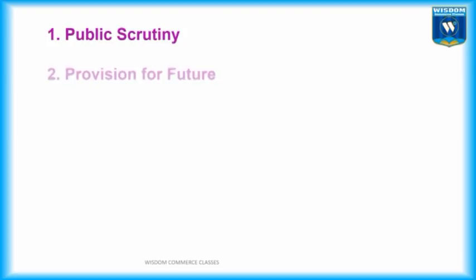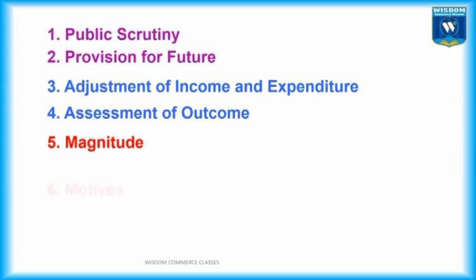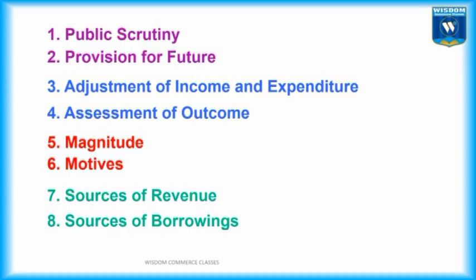The points of distinction are: 1. Public Scrutiny, 2. Provision for Future, 3. Adjustment of Income and Expenditure, 4. Assessment of Outcome, 5. Magnitude, 6. Motives, 7. Sources of Revenue, 8. Sources of Borrowing, 9. Change in Finance.